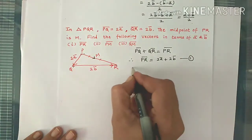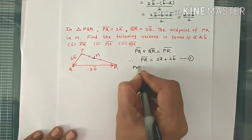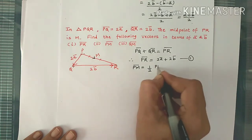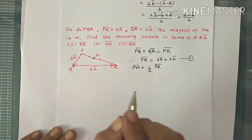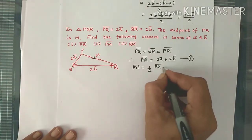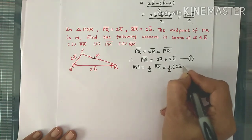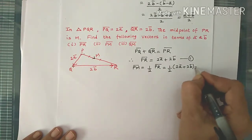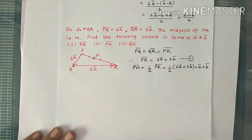Now to find PM bar. M is the midpoint of PR, so PM bar equals half of PR bar, since the direction is the same but magnitude is half of PR bar. We already have PR bar as 2A bar plus 2B bar, so substituting: PM bar equals half of (2A bar plus 2B bar). Taking 2 common and cancelling, we get PM bar as A bar plus B bar.